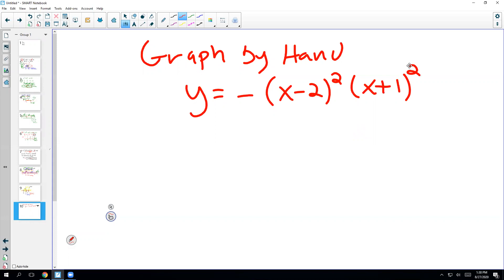We want to graph this by hand: y equals negative (x minus 2) squared times (x plus 1) squared. Now what I've done here is that this problem is already factored, which is a good thing. But if it's not factored, you can just factor it. We've talked about how to do that, so it's a little bit of work, but you can do that and then it's just like this problem.